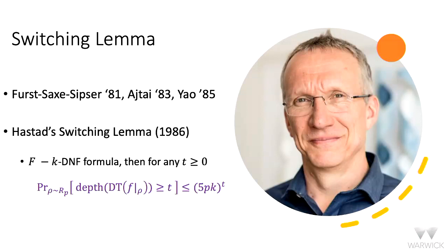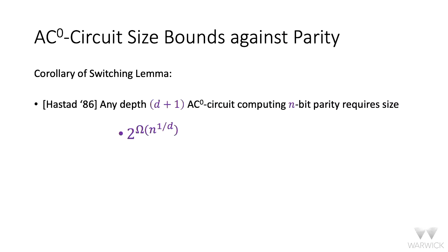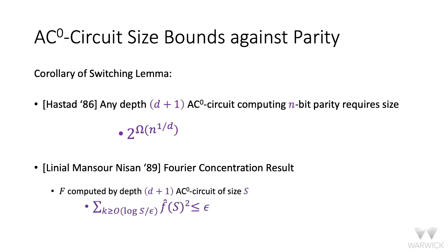Hastad showed that if you hit a DNF formula with bottom fan-in k with a random p-restriction, the probability that the restricted formula requires depth more than T is exponentially small in T, with base of the exponent of order p times k. Hastad explicitly proved this to get the optimal lower bound for AC0 circuits: any depth d+1 AC0 circuit computing the n-bit parity function requires size 2 to the omega(n to the 1/d).